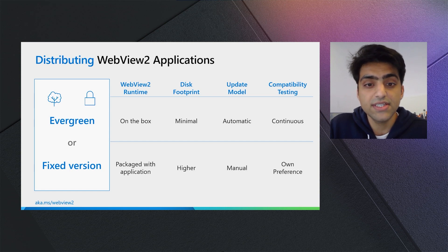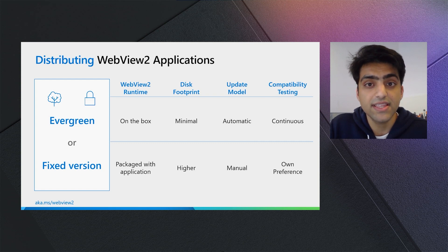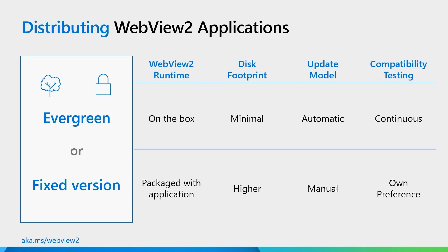Now in the fixed version, the WebView2 runtime is packaged with the application. This leads to a significantly higher disk footprint. Now the second difference is the update model. In the evergreen distribution mode, the WebView2 runtime that's shared and on the box is updated automatically by Microsoft at the same pace as the Microsoft Edge browser. This ensures that WebView2 developers get access to the latest and greatest web platform, with all new feature requests, bug fixes, and security patches.